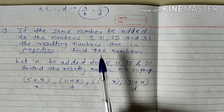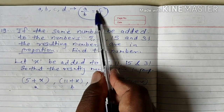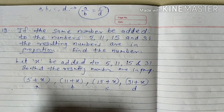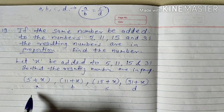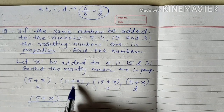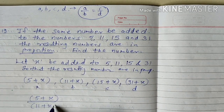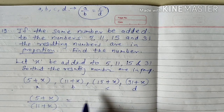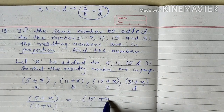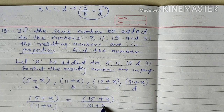If these numbers are in proportion, that means we arrange them as A upon B equals C upon D. So A upon B means 5 plus X upon 11 plus X, equals C upon D, which is 15 plus X upon 31 plus X.